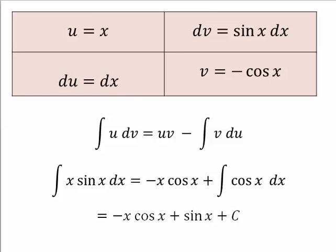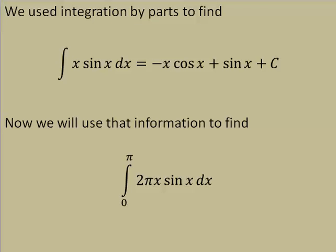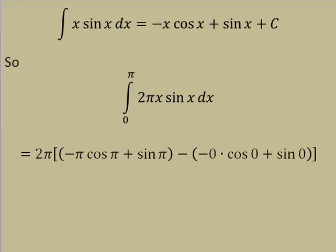All right, let's go back. We said we were going to use integration by parts to find the integral. Now we're ready to find the volume of our solid. We evaluate at π and then subtract the evaluation at 0.